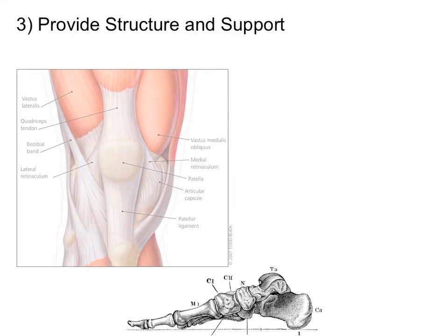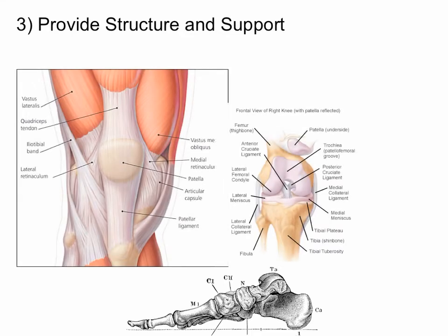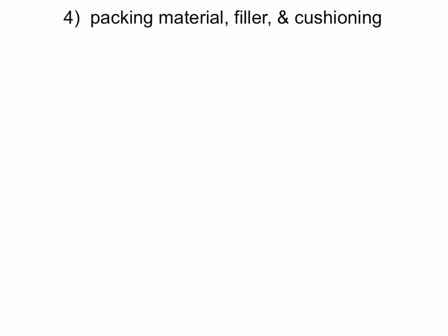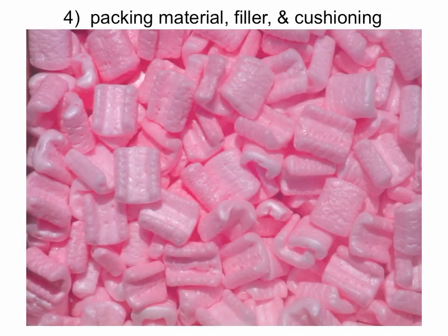Connective tissue also provides structure and support — bone, tendons, ligaments, and cartilage are all types of connective tissues. They also provide packing material, filler, or cushioning. If you dissected the fetal pig or the frog, there's not a whole lot of packing material. However, if you look at pictures of a cadaver, you can see places where there's different material between things holding everything together so that things don't slosh around as you walk around.